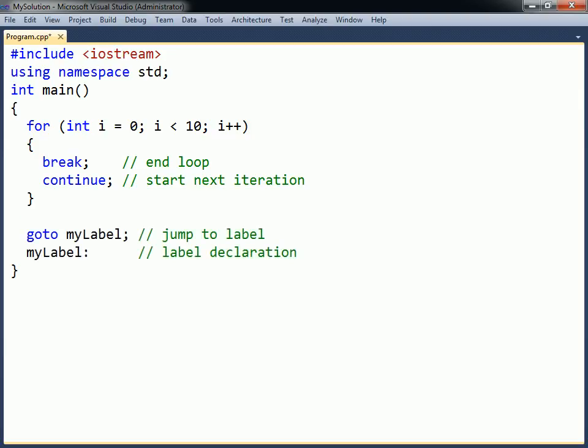A third jump statement that may be useful to know of is goto, which performs an unconditional jump to a specified label. This instruction is generally never used, since it tends to make the flow of execution difficult to follow.